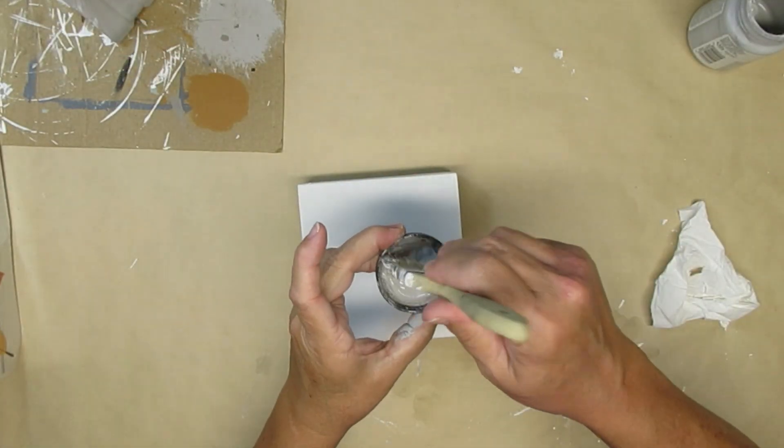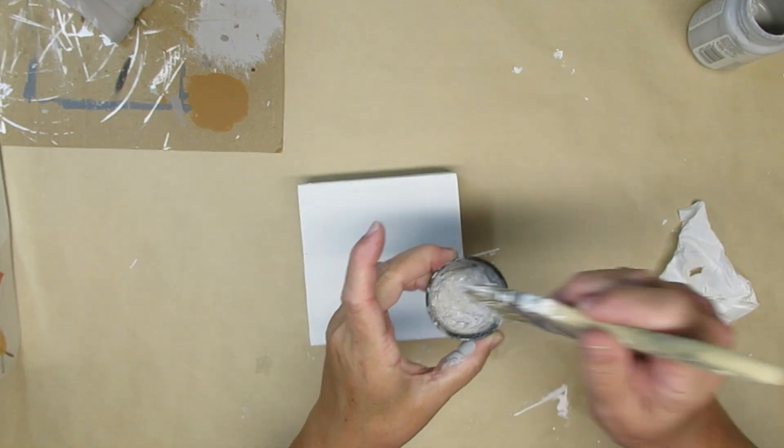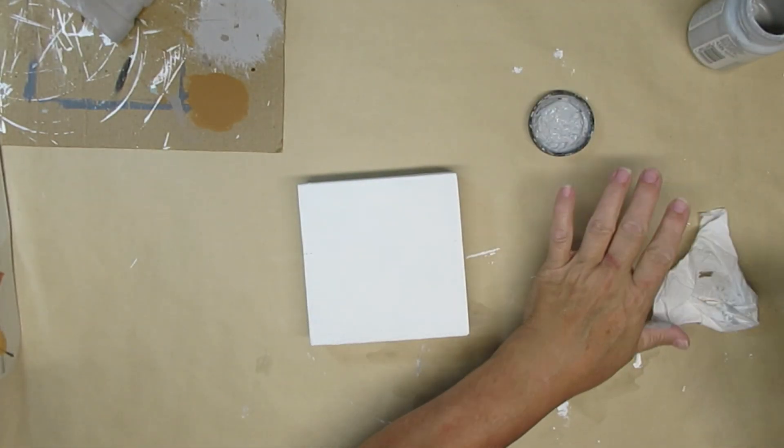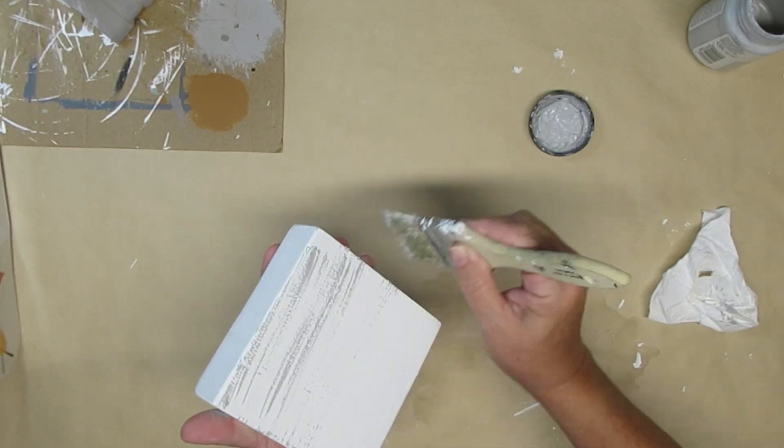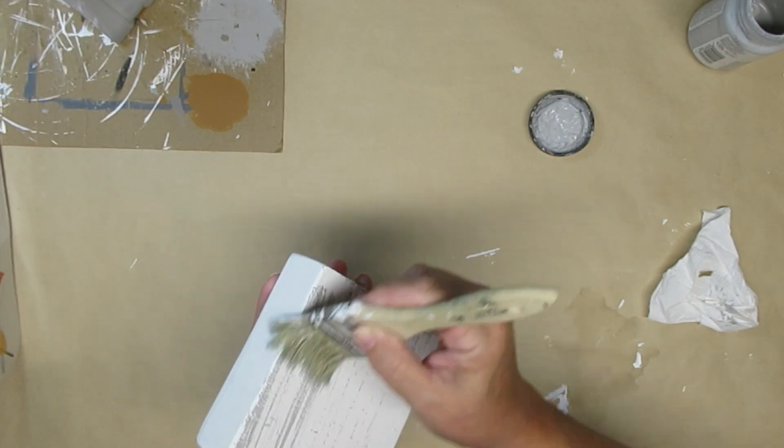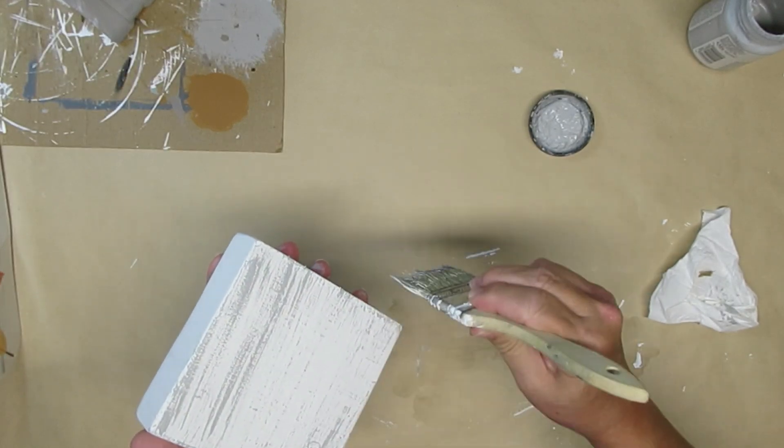I've always got scrap pieces of wood hanging around so I thought I would take this two by four piece. I painted it completely white and now I'm just taking a chip brush with some light gray chalk paint and I'm just going to give it a little bit of a dry brushing. Give it a little bit more texture.